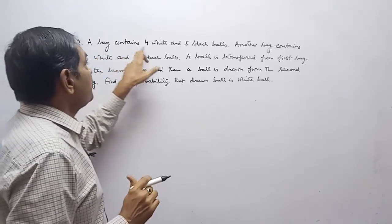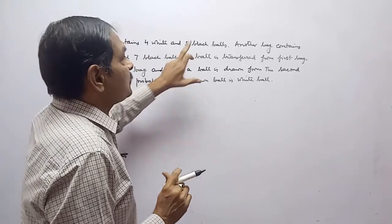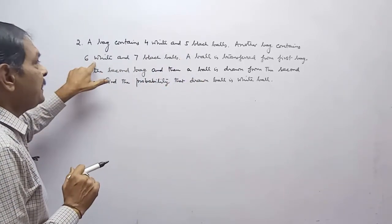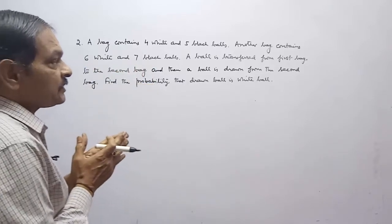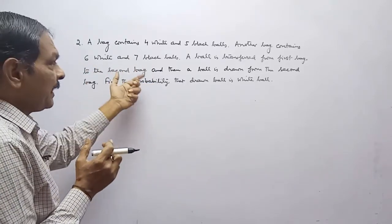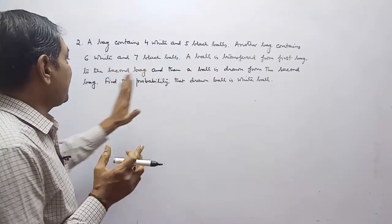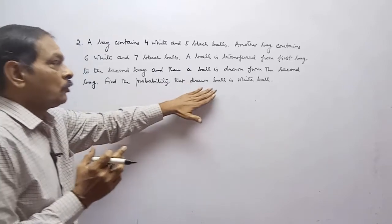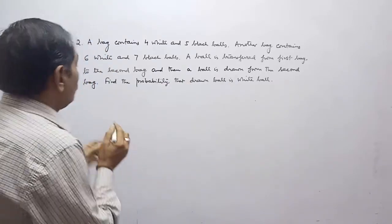A bag contains four white and five black balls. Another bag contains six white and seven black balls. A ball is transferred from the first bag to the second bag and then a ball is drawn from the second bag. Find the probability that the drawn ball is a white ball.